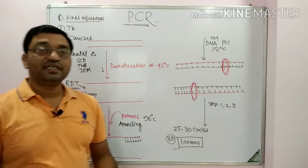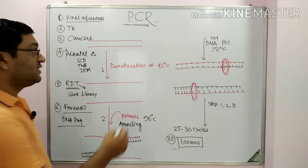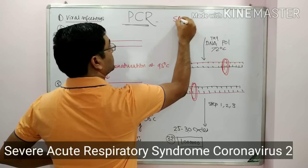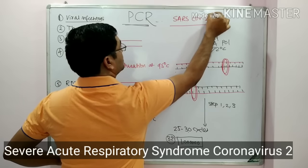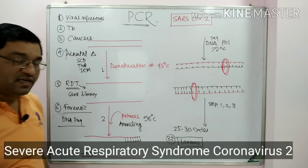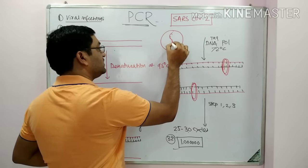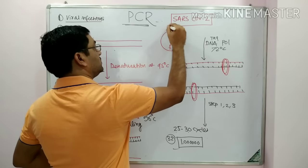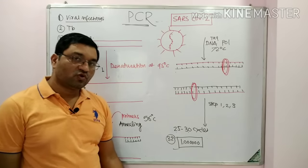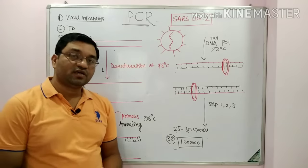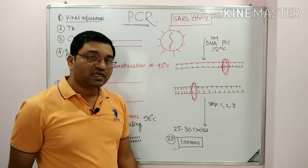Now, how is PCR useful in the detection of viral infections, particularly COVID-19? COVID-19 is a disease caused by the virus SARS-CoV-2. It is an RNA virus containing single-stranded RNA as its genetic material. We have heard about the RT-PCR technique — but how is it done?